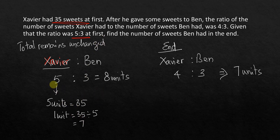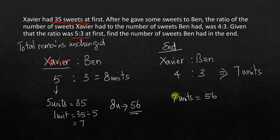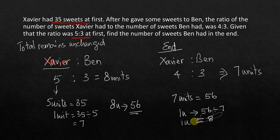We need to figure out how much 8 units is: 8 times 7 equals 56. So the total number of sweets they have is 56. This 7 units in the new ratio also equals 56, since there is no change — just different unit sizes. So 1 unit equals 56 divided by 7, which is 8. Ben had 3 units, so 3 times 8 equals 24. That's how we solve this problem. Hope this was useful — thank you, have a great day, happy learning!